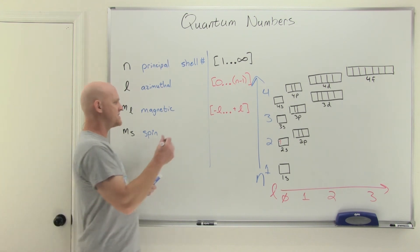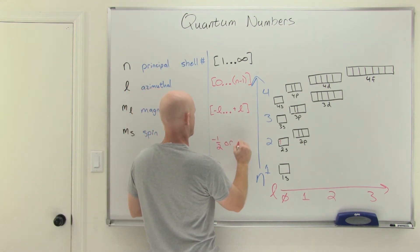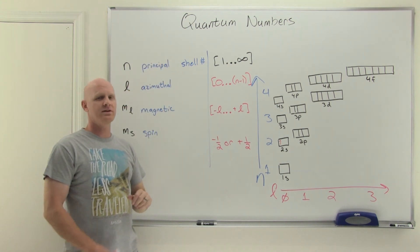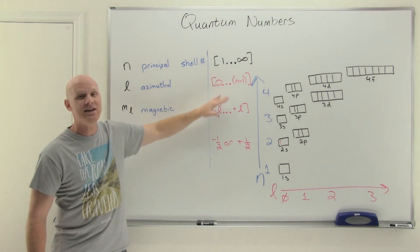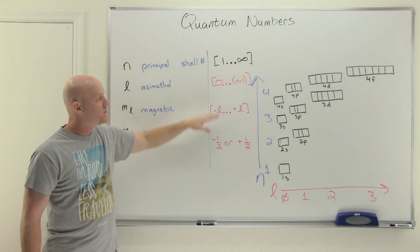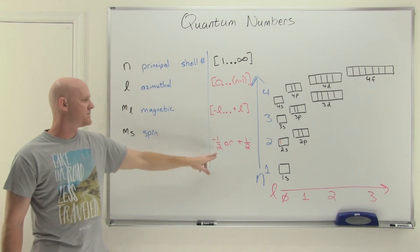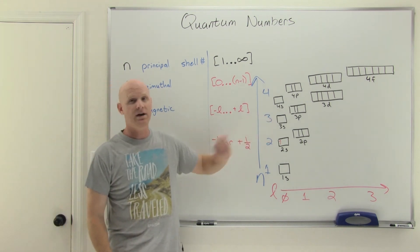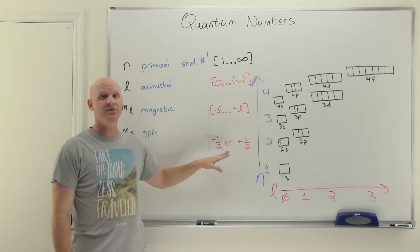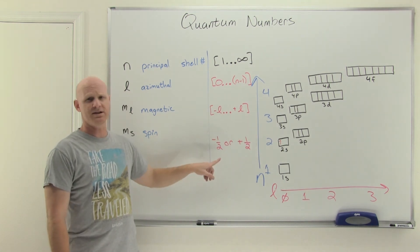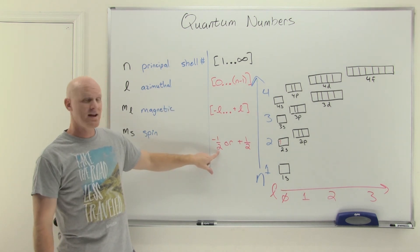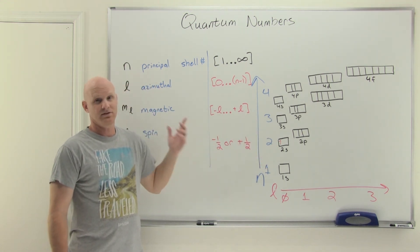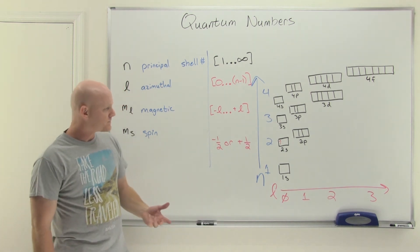Finally, M sub S is the spin quantum number and can only take two values: negative one-half or positive one-half. These arise from the underlying mathematics and represent spin up and spin down. Just as we don't define which orbital corresponds to which M sub L value, we also don't define which spin direction corresponds to negative one-half versus positive one-half — we just know they are opposites.